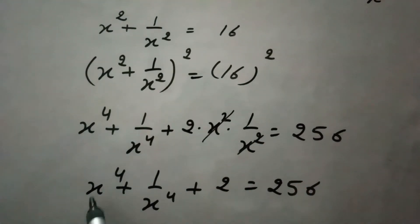We have x⁴ + 1/x⁴ + 2 = 256. We need to find the value of x⁴ + 1/x⁴ only, so we move the 2 to the other side and subtract from 256.